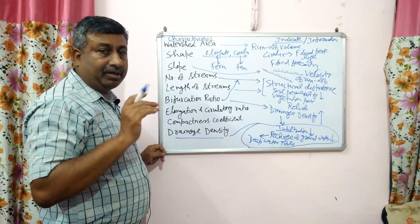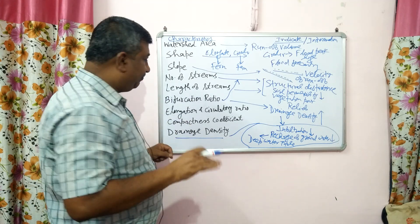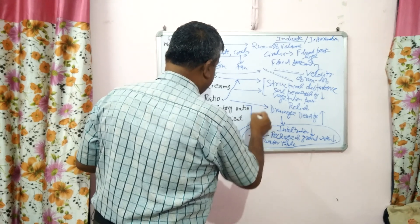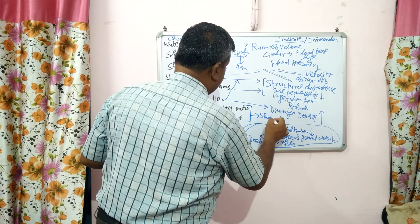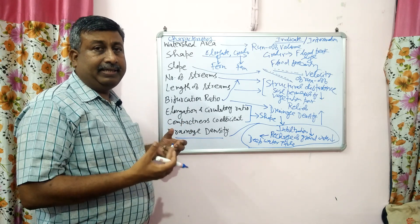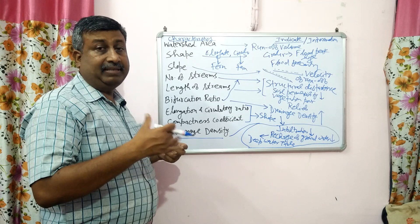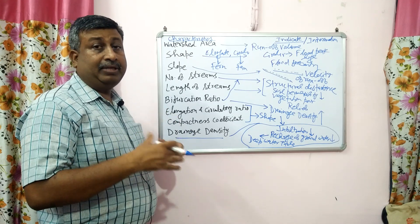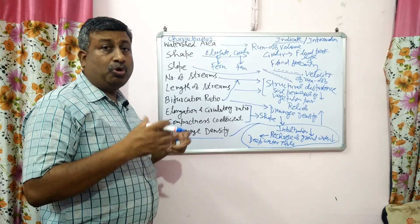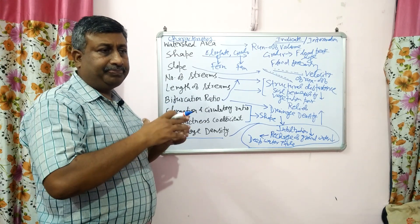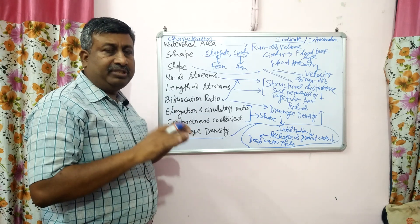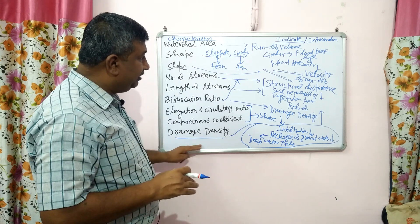Drainage density is directly related with runoff and inversely related with infiltration. Elongation ratio, circulatory ratio, and compactness coefficient are all related with shape. If elongation ratio is less than 0.7, the watershed is elongated; 0.7 to 0.8 is less elongated; 0.8 to 0.9 is oval shape; and more than 0.9 is circular. For circulatory ratio, a value close to 1 indicates circular shape, and values beyond 1 indicate elongated. Videos on elongation ratio, circulatory ratio, compactness coefficient, and drainage density are available in the watershed playlist.